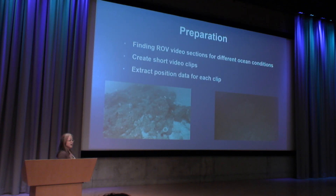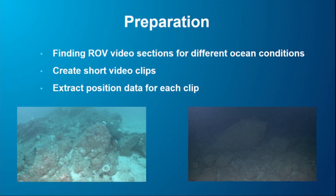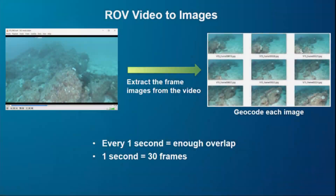Once I got the data, I had to prepare the video. First, I looked through it to find sections with different ocean conditions — one very light, one very dark — so I could compare results later. Then I created short video clips of about one to two minutes each. Because these videos are not geocoded — the position data is kept in a separate database — I had to extract the position data corresponding to each video clip. Once that was done, I was ready to run the photogrammetry software.